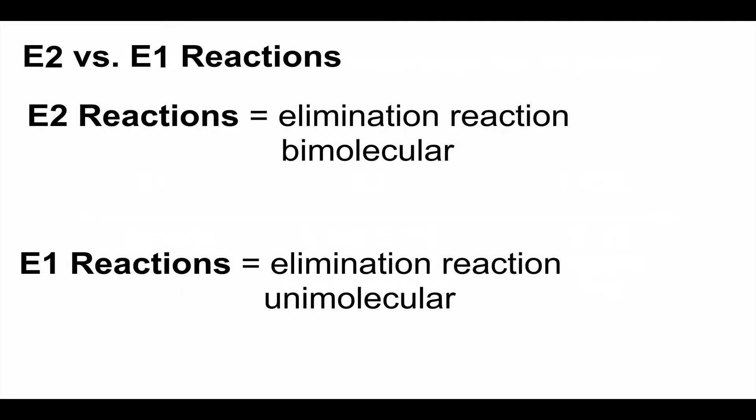E2 reactions are second-order kinetics, meaning that by changing the concentration of either your base or your substrate, you're going to see a change in the rate of the reaction. With E1, kinetic studies show that it really doesn't matter what you do with your base concentration or strength, because E1 reactions are only dependent upon the rate-determining step — which is loss of the leaving group. It is independent of the concentration of anything else in the beaker.